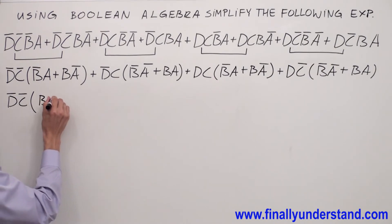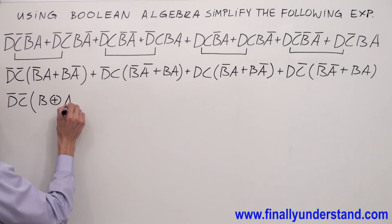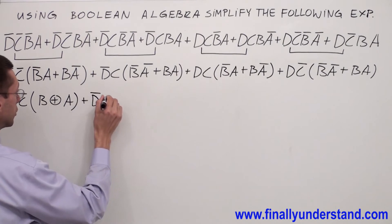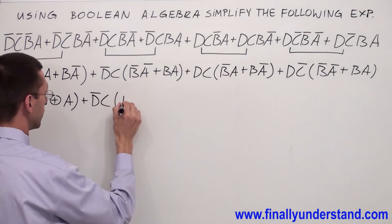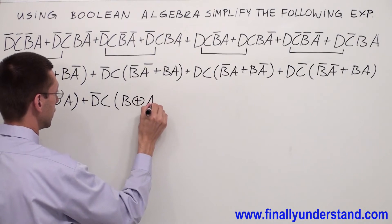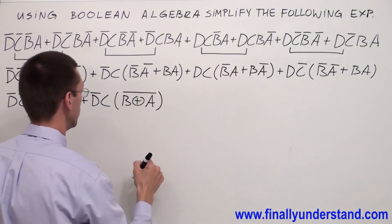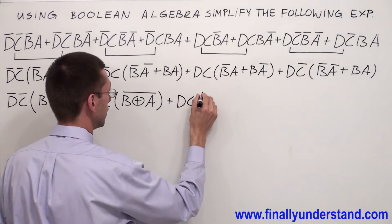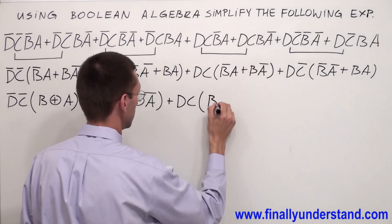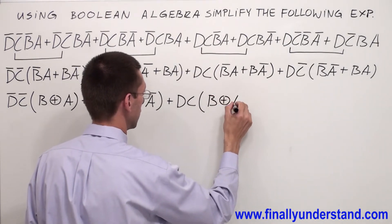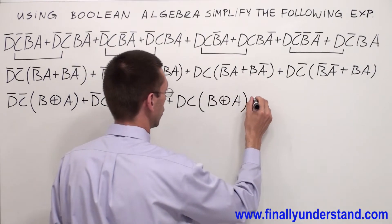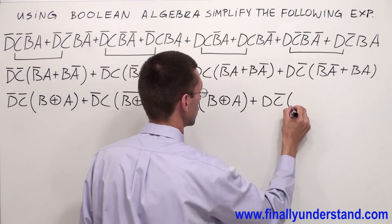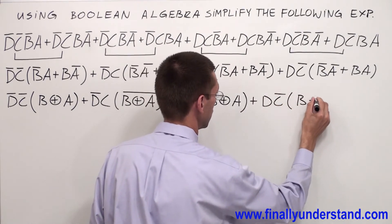That's why I'm going to have B exclusive OR A, or D0C exclusive NOR. NOR, B0A, or D0C exclusive NOR B0A, or D0C0 and exclusive NOR B0A.